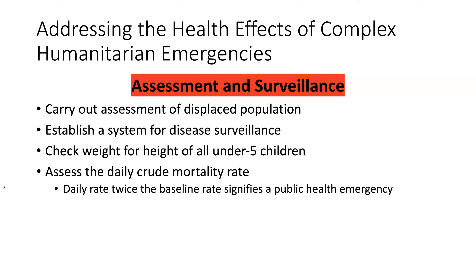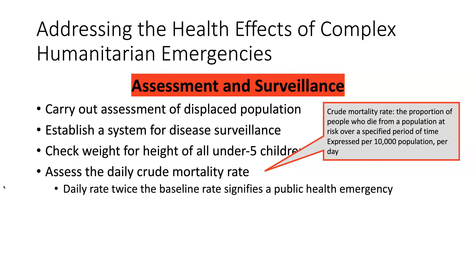When addressing health effects of complex humanitarian emergencies, assessment and surveillance must be carried out first: assessing the displaced population, establishing a disease surveillance system, checking the weight and height of all children under five, and assessing the daily crude mortality rate — expressed as the proportion of people who die per 10,000 population over a specified period. Children who are malnourished or showing signs of stunting should be identified and helped as soon as possible.